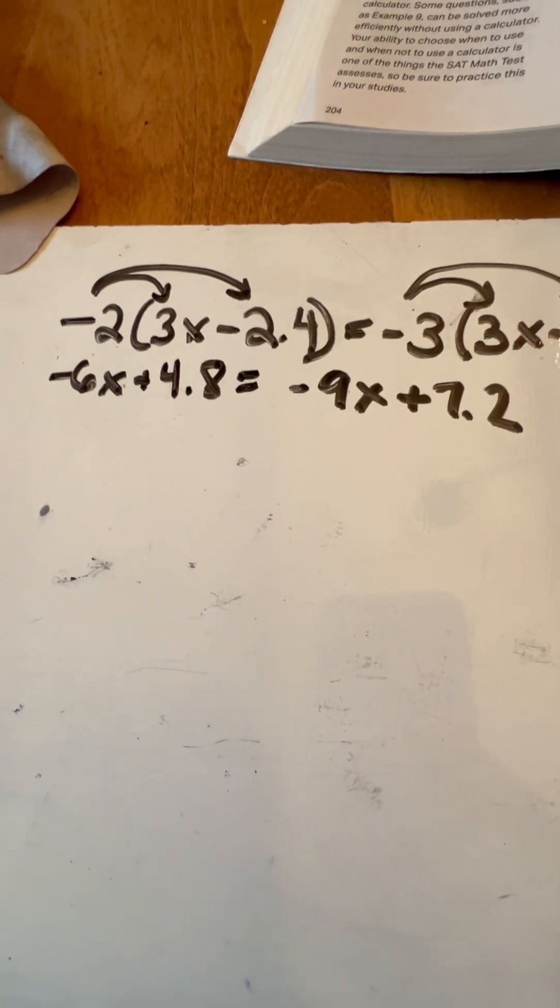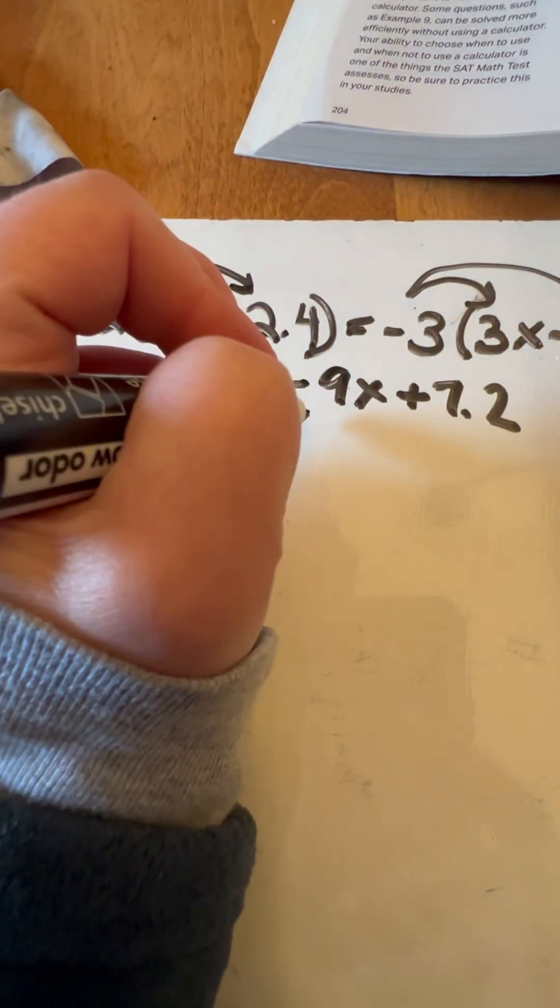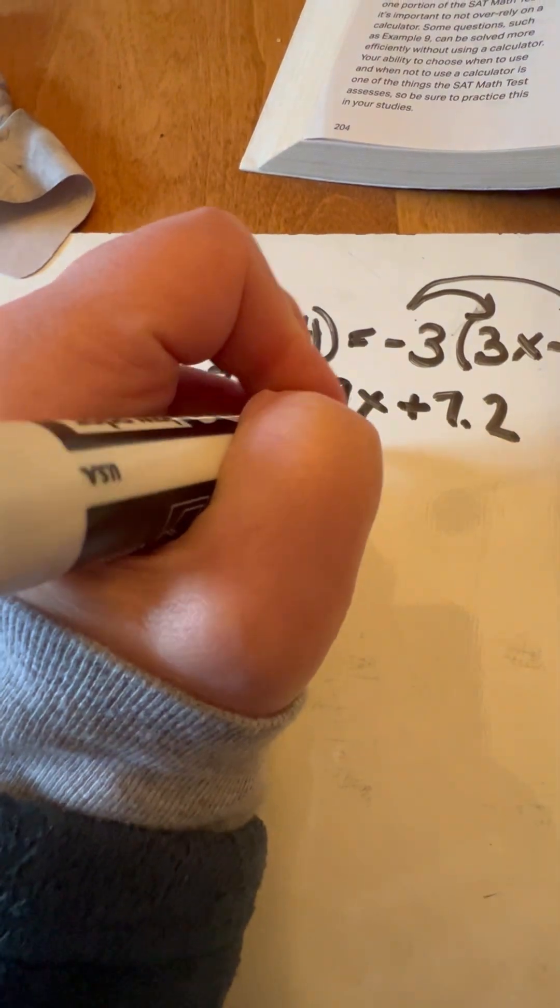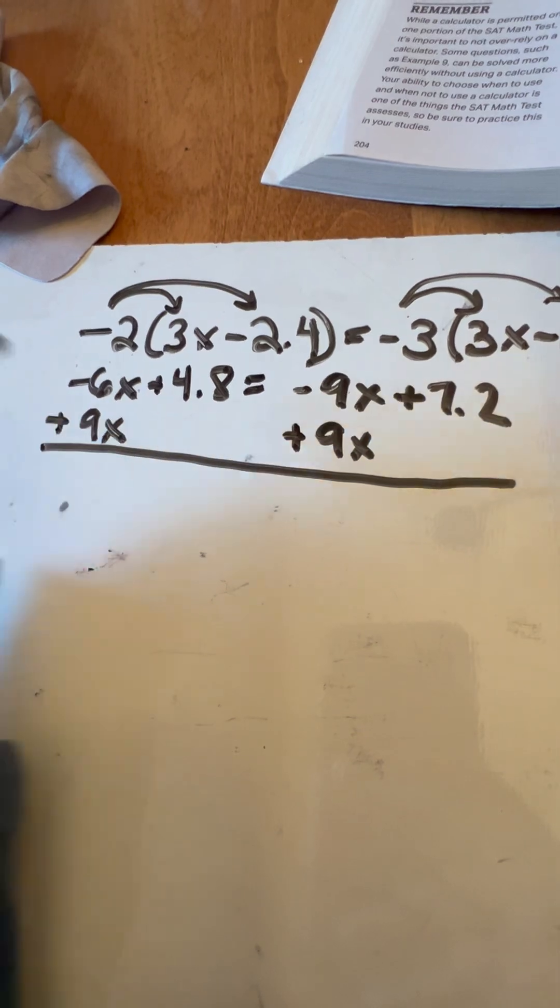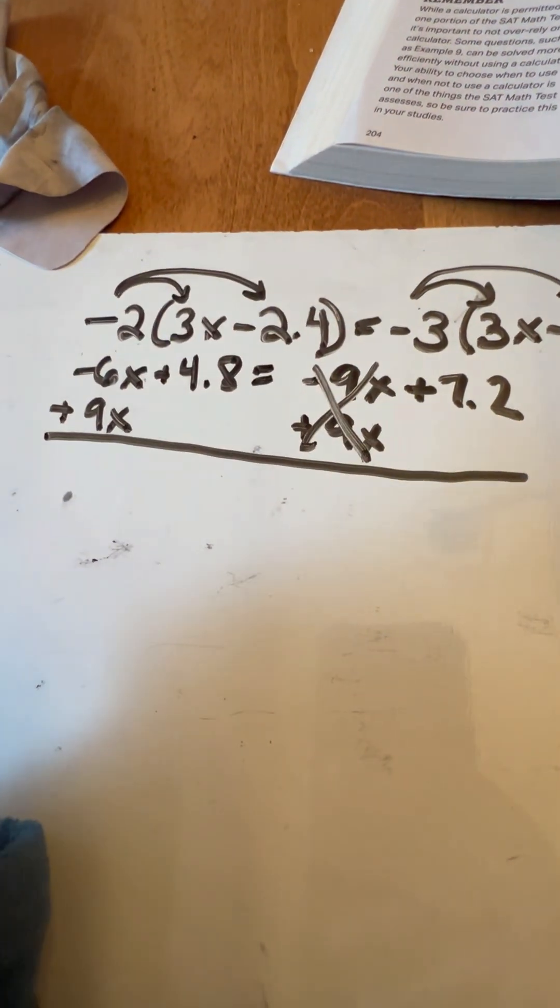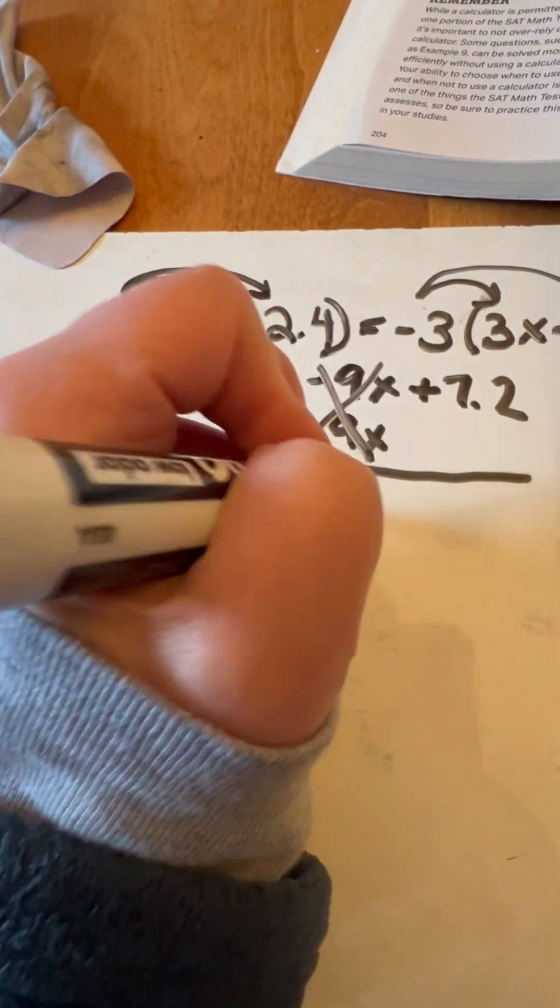A little bit cleaned up, but now we're going to continue on. What I'm going to do is I like to make my variables positive when I move them. So whenever possible, I'm going to add the 9X this time and cancel that out. That's going to be leaving me with 7.2 over here.